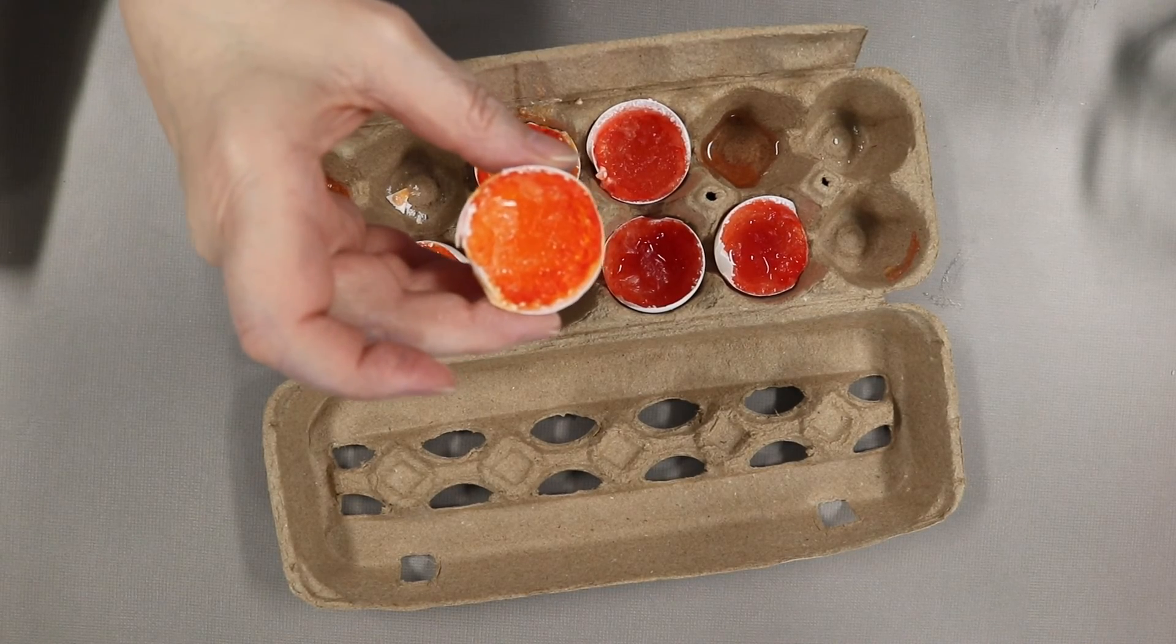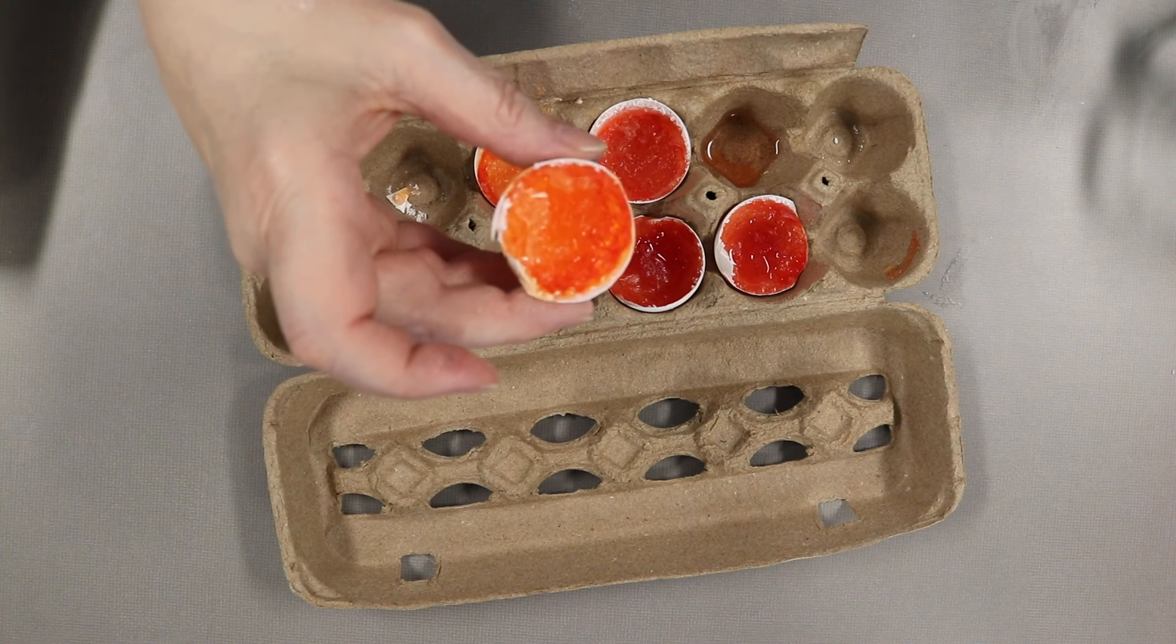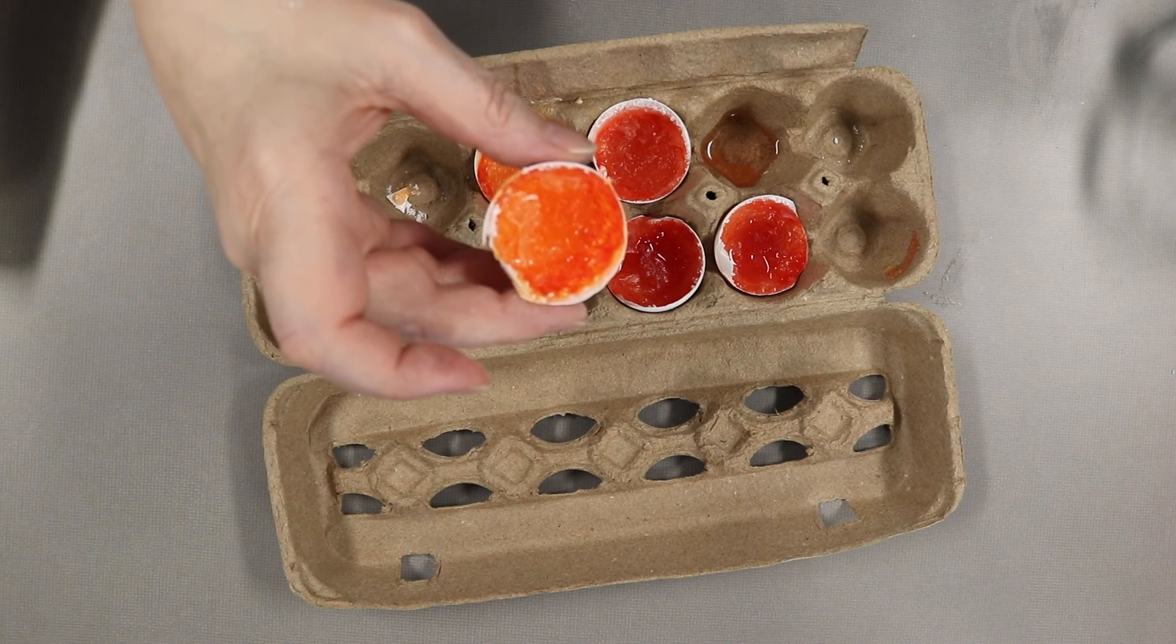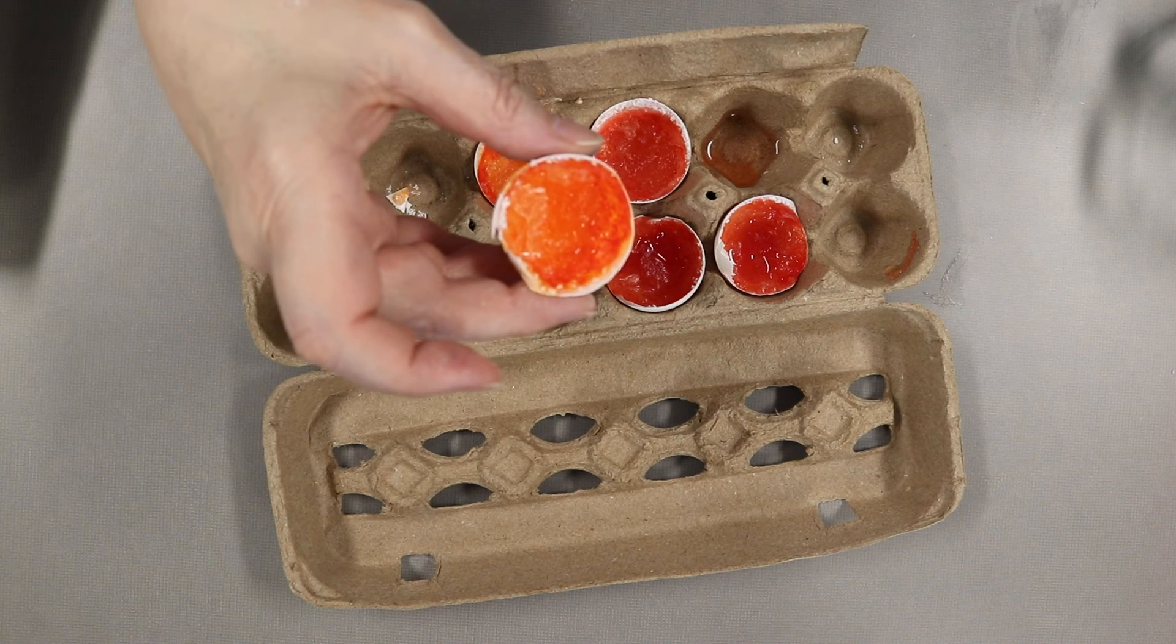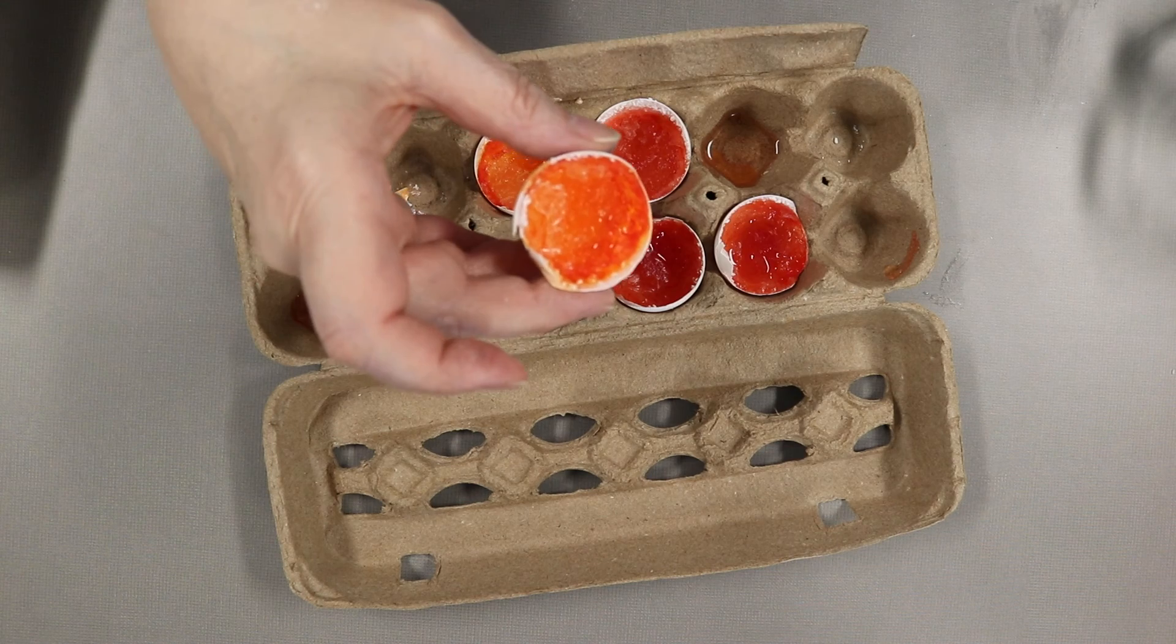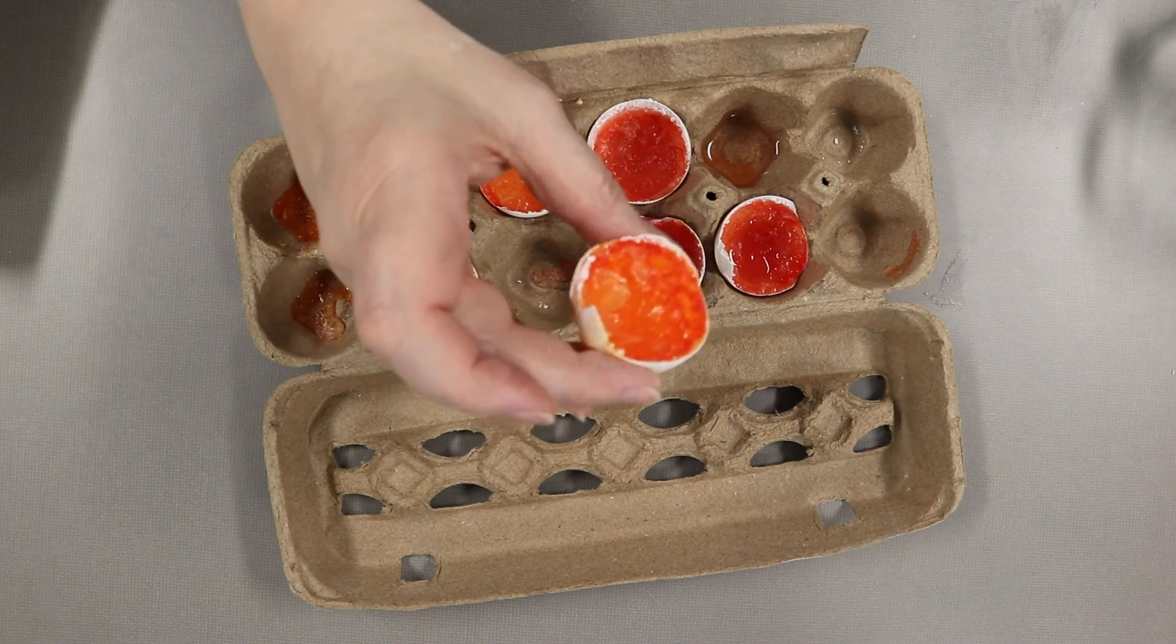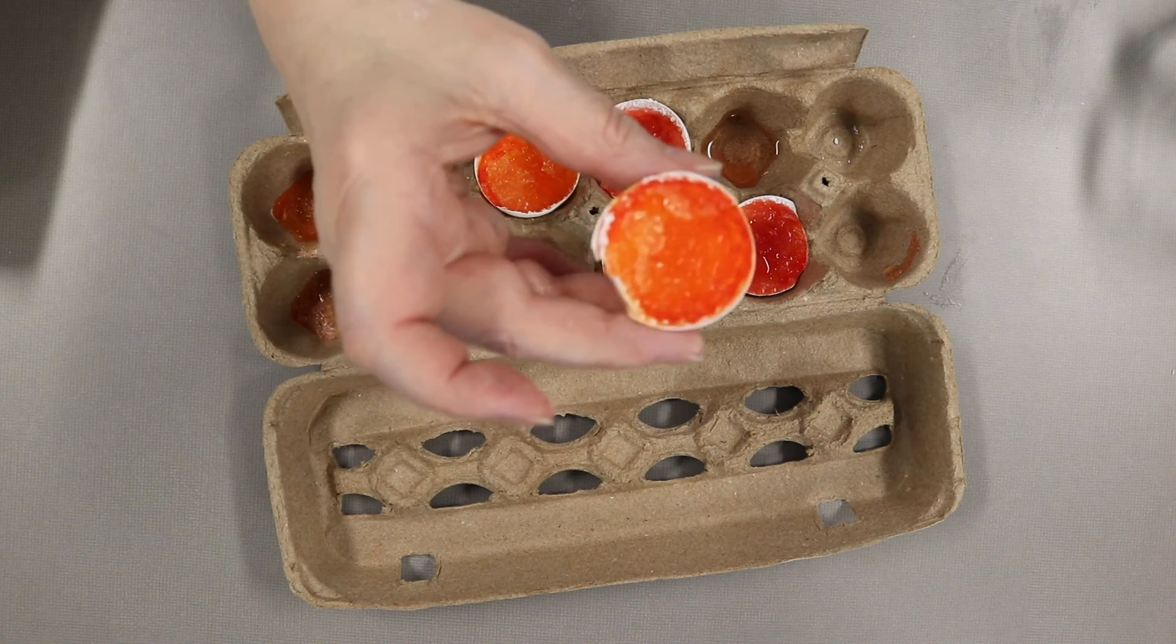Now for the science. When you add Epsom salts to water, the salt dissolves. As the solution cools, the magnesium sulfate atoms in the Epsom salt run into each other and join together into a crystal structure. The crystals will be shaped like long needles like what you see here.